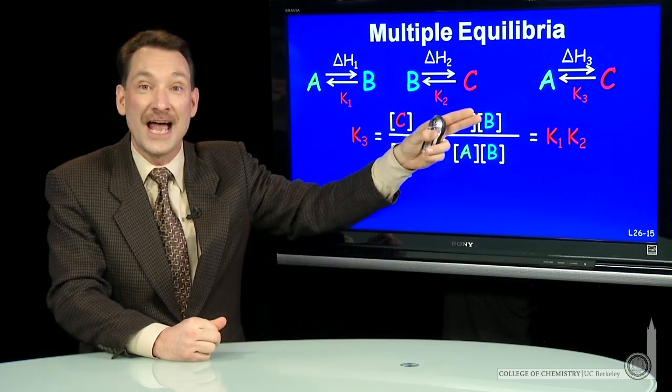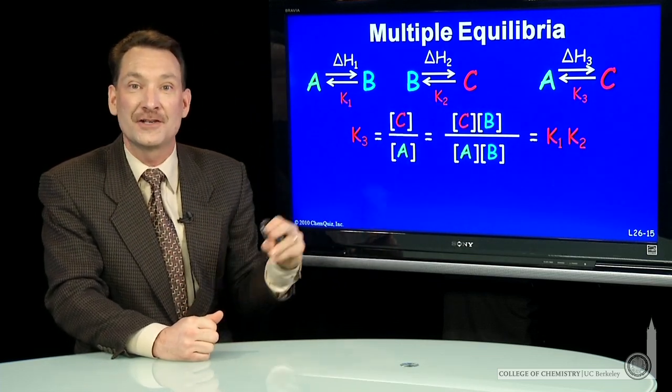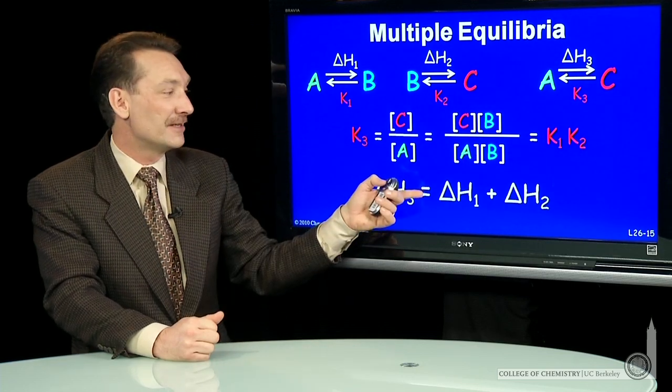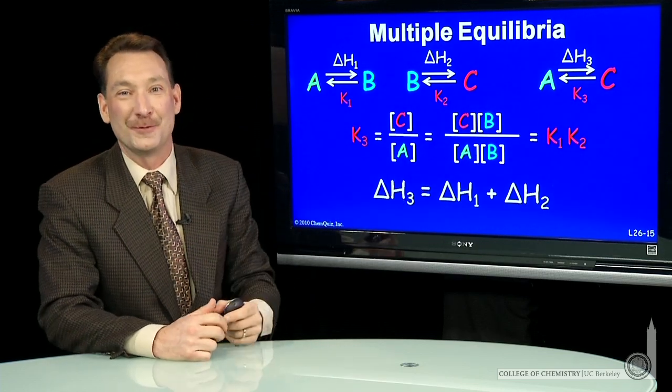So sequential reactions or sums of reactions, I multiply. I take the product of the equilibrium constants and I add the enthalpies.